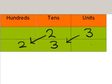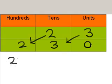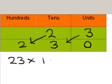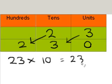So what we've got here is two hundred and thirty, which adds an extra zero in the units. We found out that twenty-three times ten gives us two hundred and thirty. In effect, when you multiply a whole number by ten, all the columns move along one place.